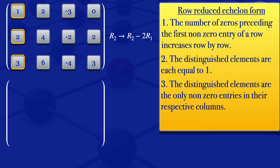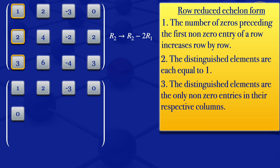So I will have my matrix there. Row number one I'm not changing for now, so it's 1, 2, -3, 0. Then for row number two: two minus two gives us zero; four minus four gives us zero; then minus two minus minus six gives us four; then two minus zero is just two.